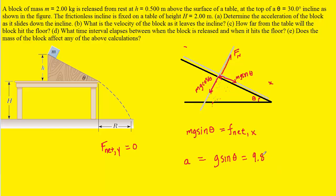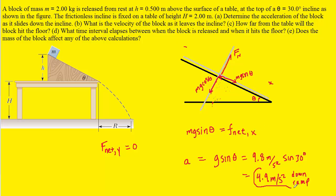Plugging in g = 9.8 m/s² and the incline angle of 30 degrees, and making sure the calculator is in degree mode, we get 4.9 meters per second squared, accelerating down the ramp. That is the correct answer to part A.